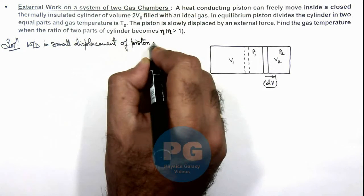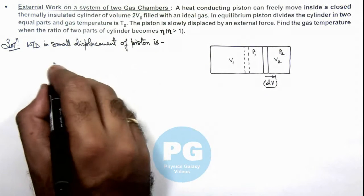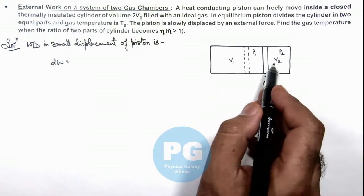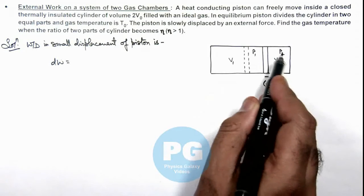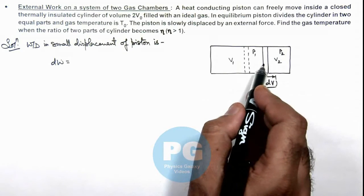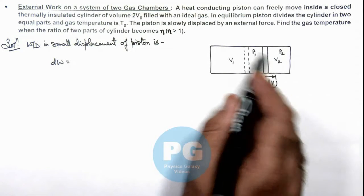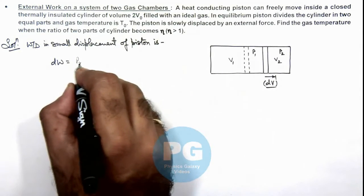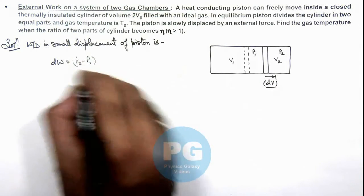This work done we can write as dW, which is, obviously as the second part is compressed P₂ will be more. So external agent has to do the work against P₁ and P₂ where P₁ is supporting, P₂ is opposing. So this will be (P₂ - P₁) multiplied by dV.